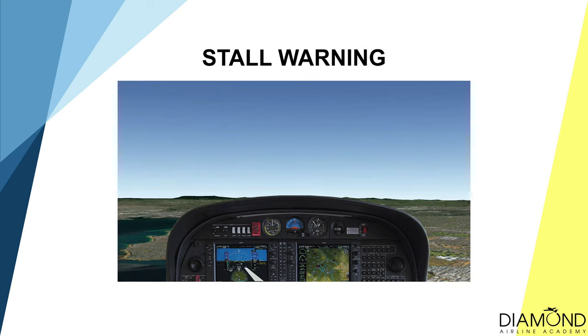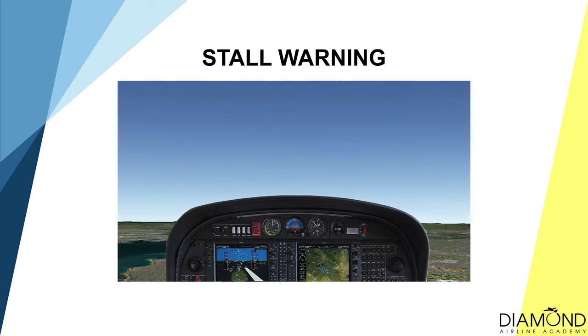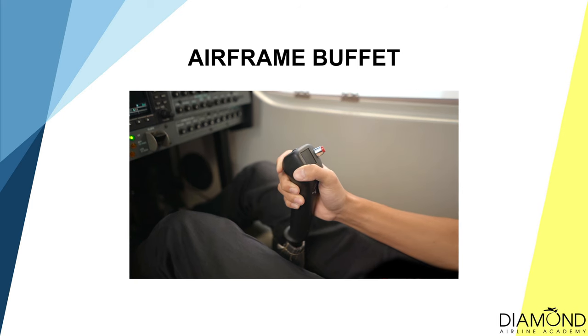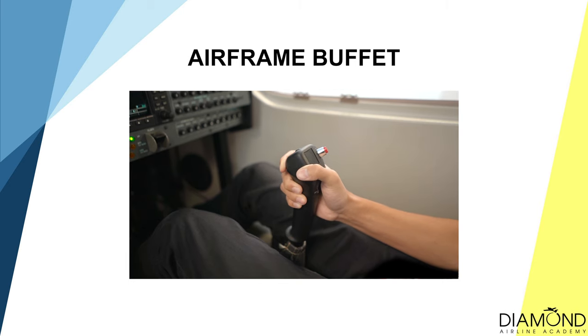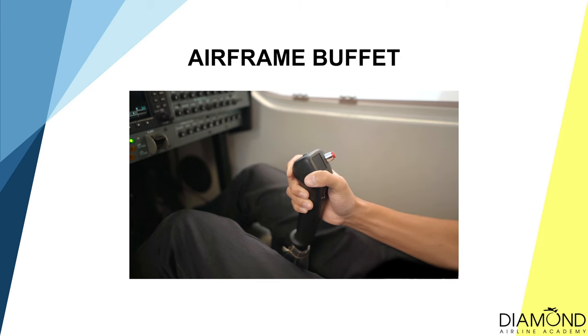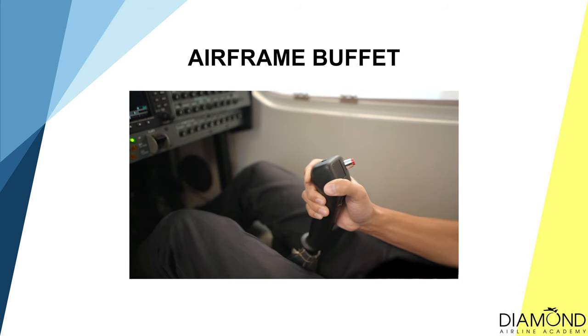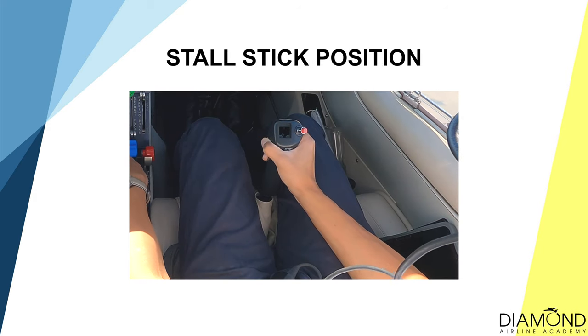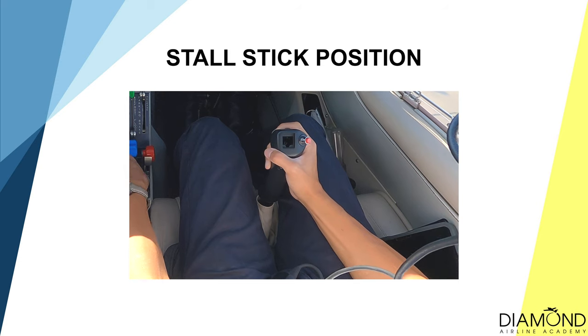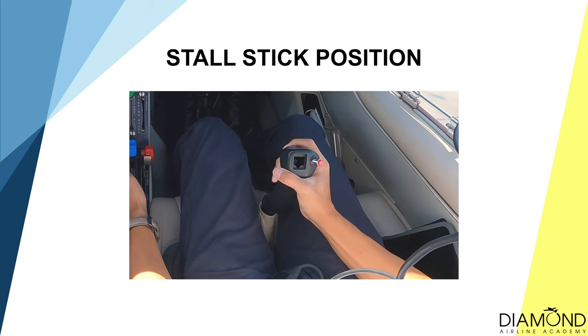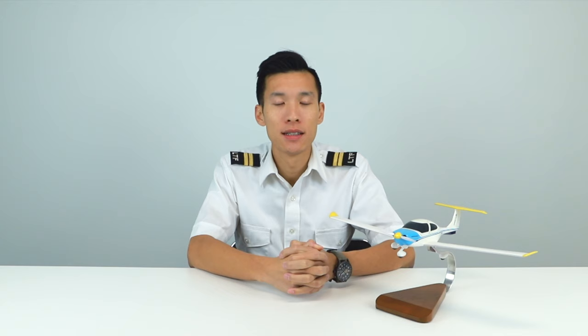The fourth symptom is the stall warning — an aural warning to warn the pilot that a stall is imminent. When the main wing is about to stall, a fair amount of turbulence is created, travelling behind the wing and distorting the airflow on the elevator, causing vibrations on the elevator. This sensation is transmitted from the elevator back to the control stick — we call this the control buffet. Last but not least is the control stick position: as we approach a stall, the control stick will be aft, sometimes even fully aft. Those are the six symptoms of stalling.